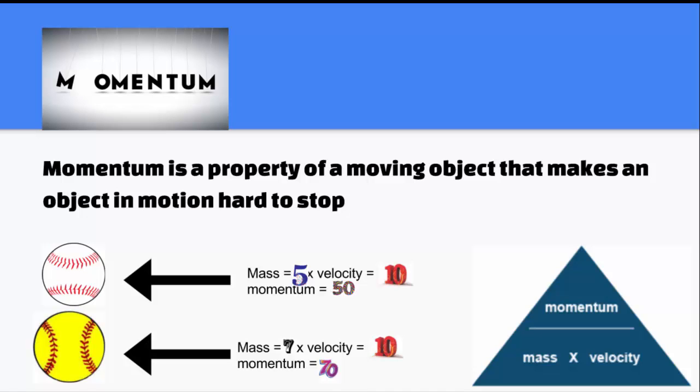The softball and baseball seen on your screen have the same velocity, but because the softball has greater mass, it also has greater momentum.